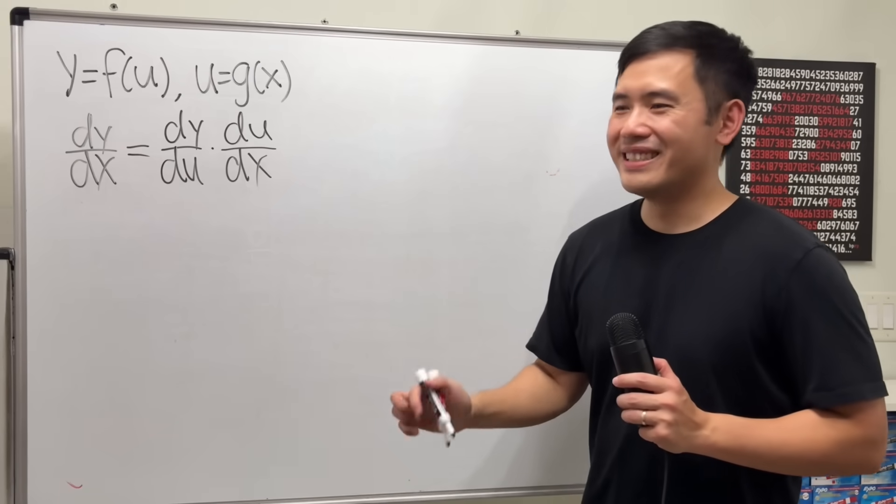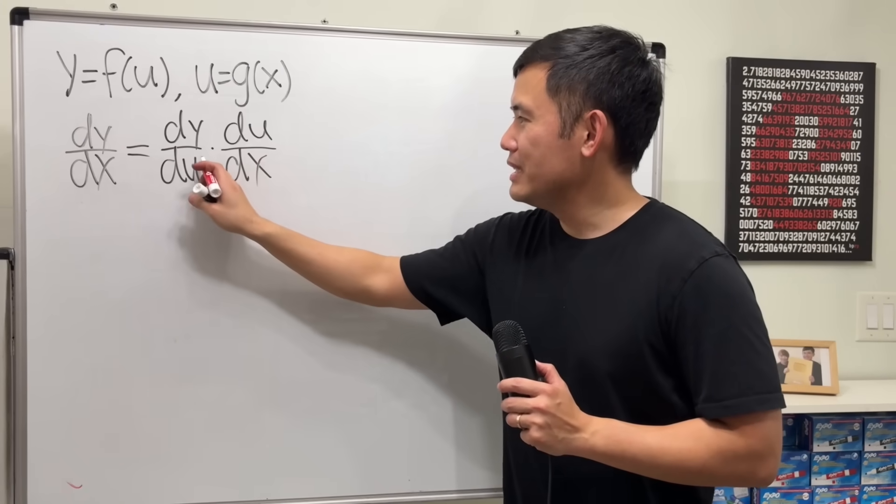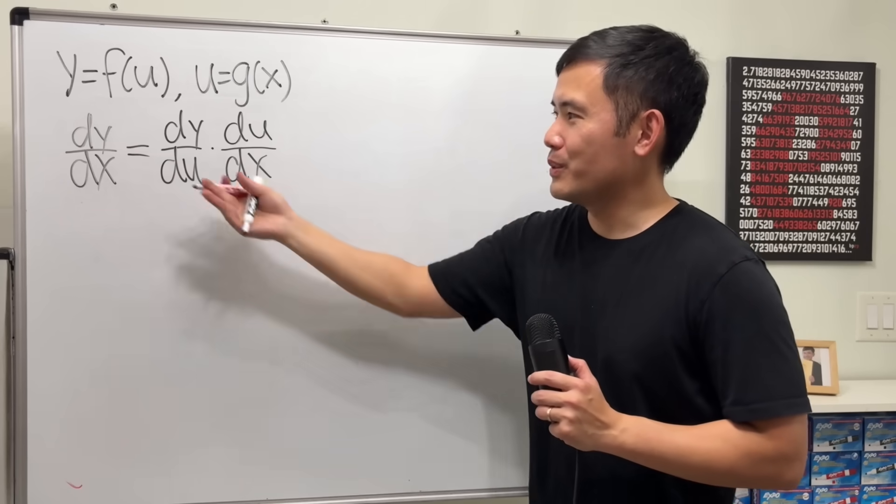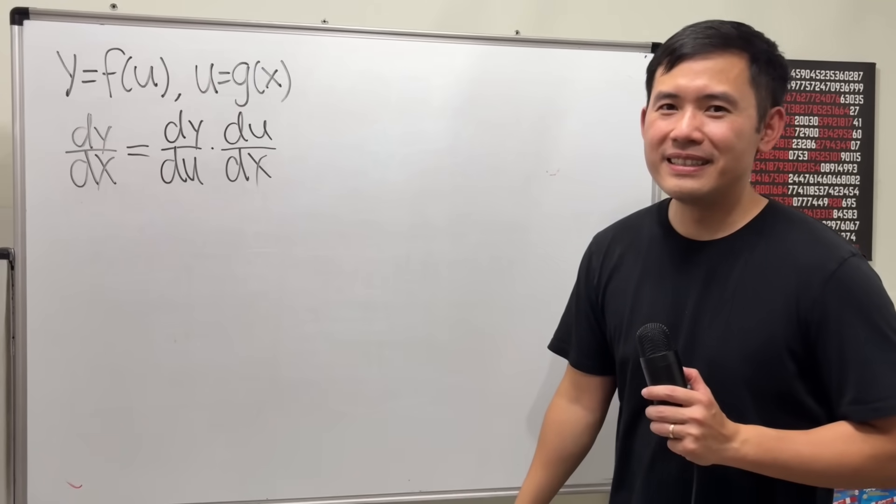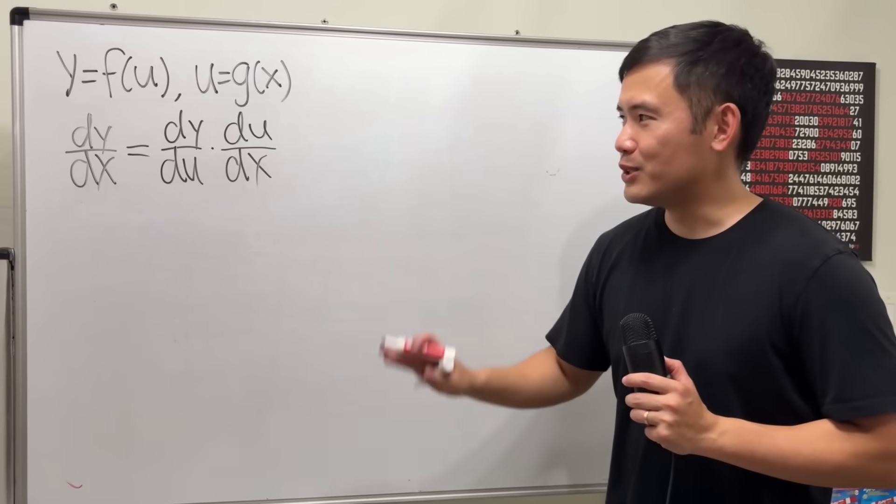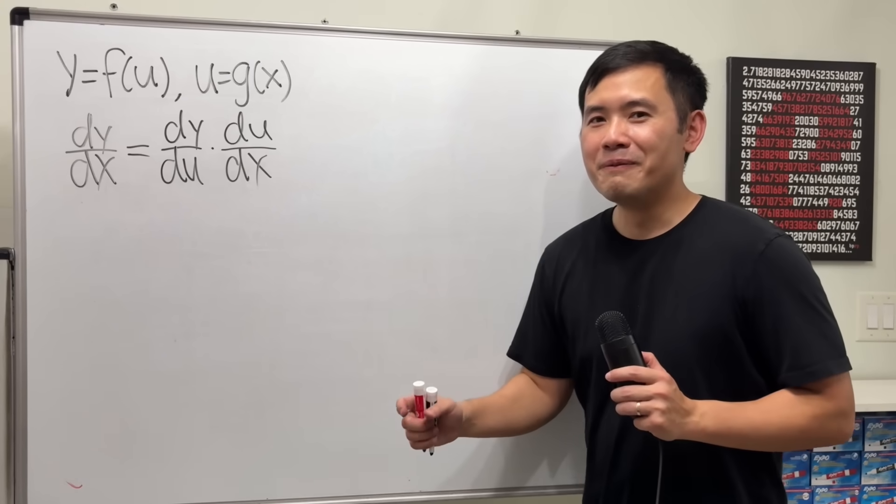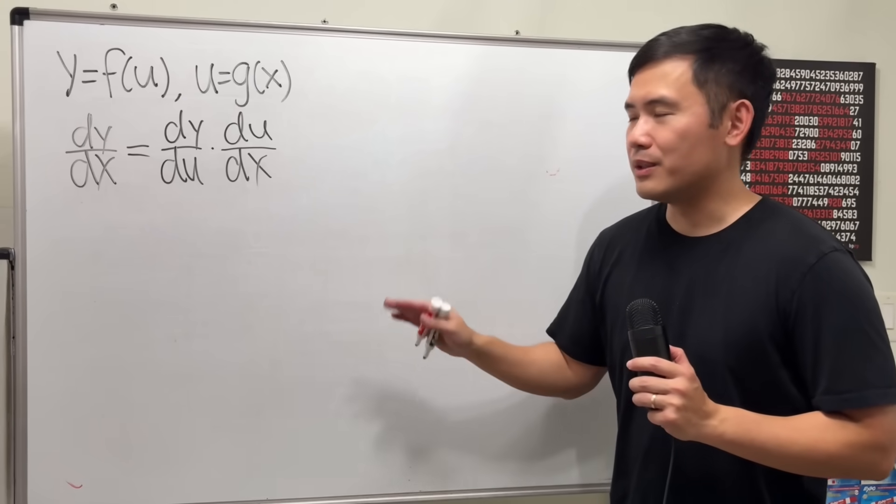And now here's the common joke. Once we have this, it looks like we can just cancel the du and the du, and we get dy dx, which works very nicely, right? I know, it's just a joke. It does not work like that. Technically. And I feel guilty I have done it before, but anyways.